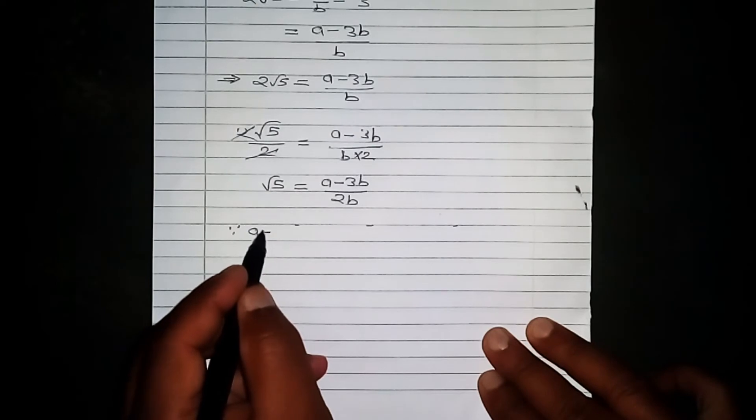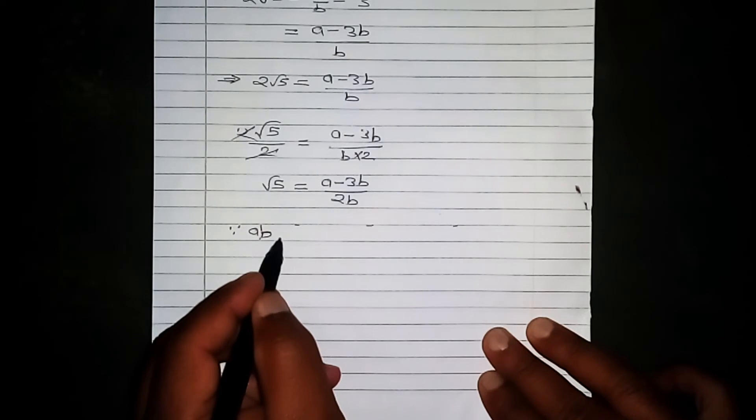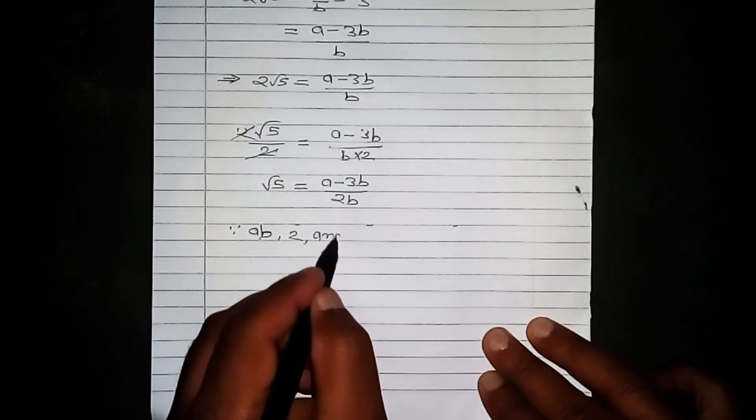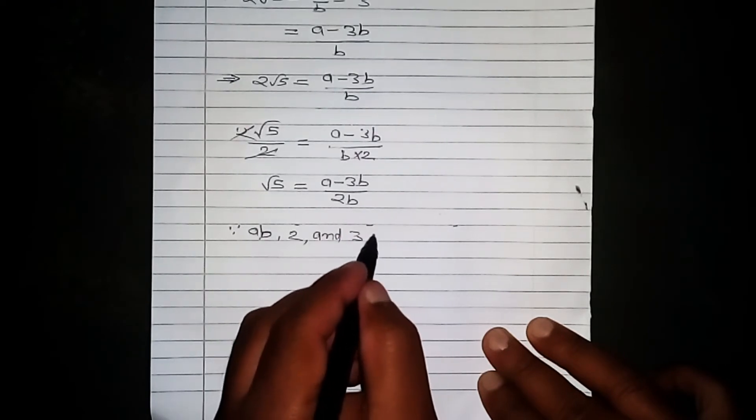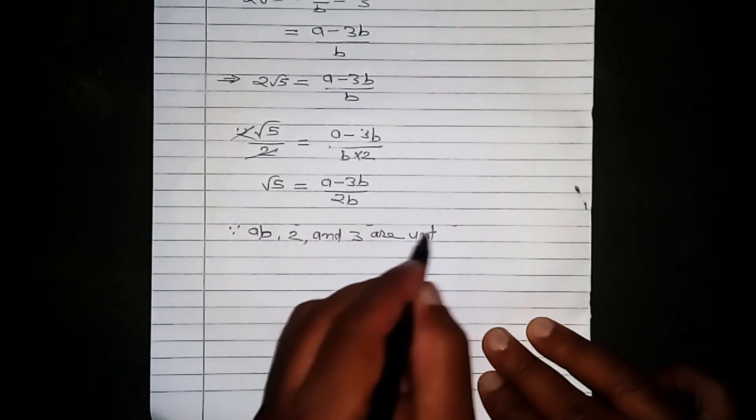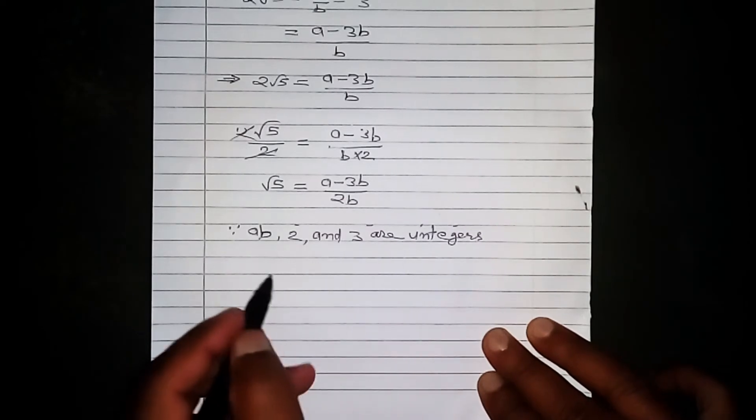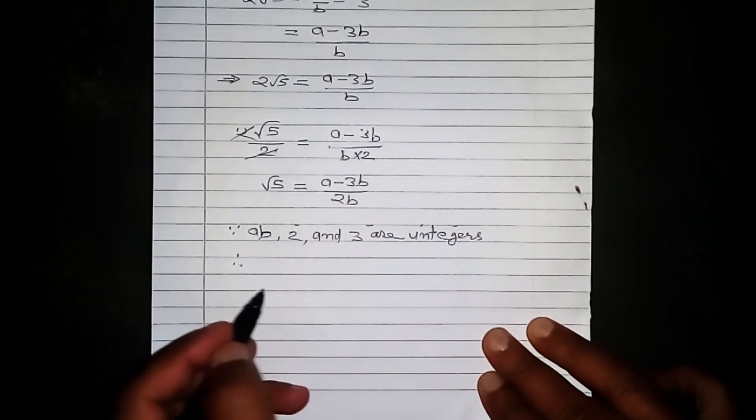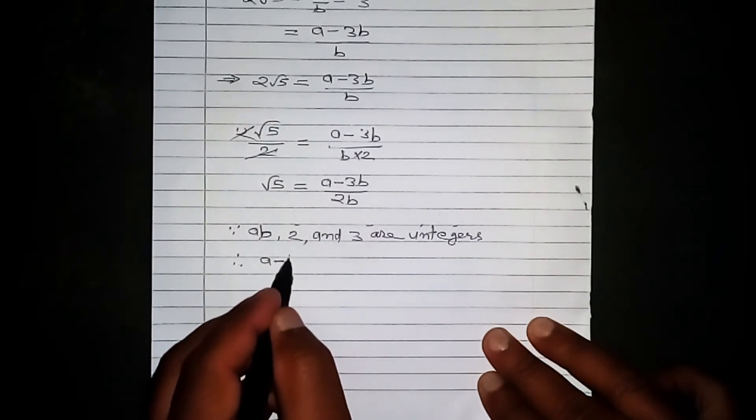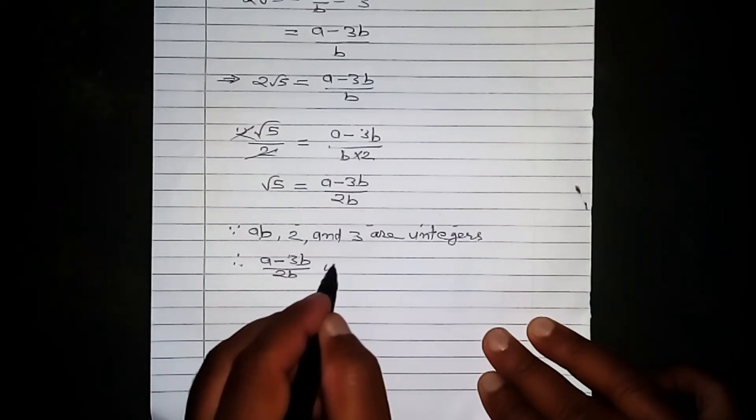Since a, b, 2, and 3 are integers, therefore a minus 3b by 2b is rational.